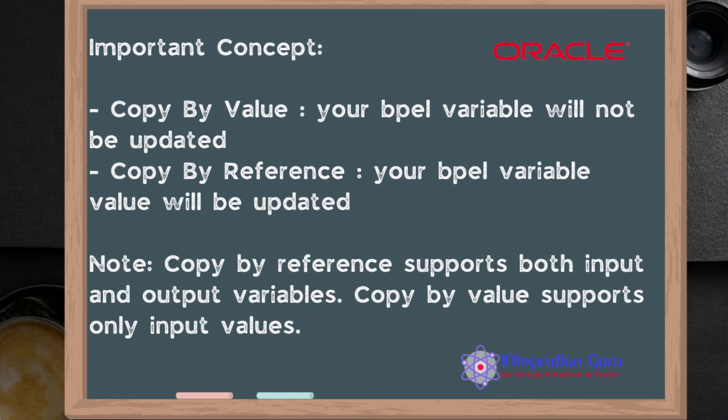To simplify further: for subprocess input variables, you can use copy by value; but for output variables, don't use copy by value, because you want to update the calling process's variable value. Don't worry if it's a bit confusing — we will use both in our demo. If you want to dig deeper, knowledge of pointers in programming languages will help you understand this concept at a deeper level. Alright, let's start the demo.